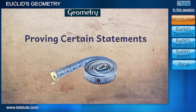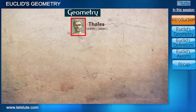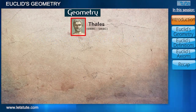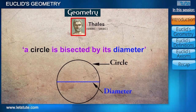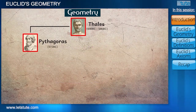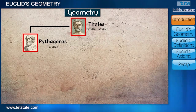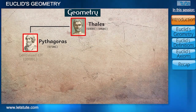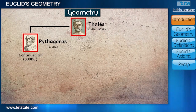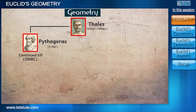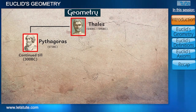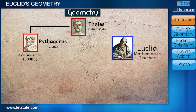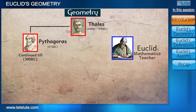A Greek mathematician, Thales, was the first person to give a proof of a statement — that a circle is bisected by its diameter. Pythagoras was one of his most famous pupils who did extensive work in geometry, which continued till 300 BC. At that same time, around 300 BC, Euclid, a mathematics teacher in Egypt, was also working on geometry.